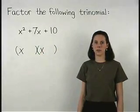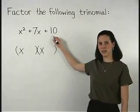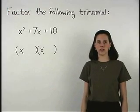The second term in each binomial will be a factor of our constant term, which in this case is ten. The trick is, ten factors in different ways.